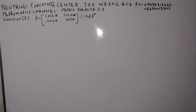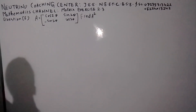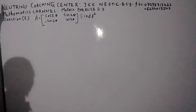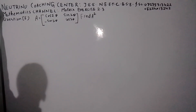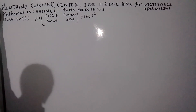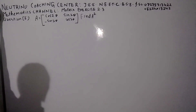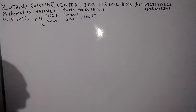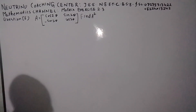Question number 6. Matrix A is: cos(root theta), minus sin(root theta); sin(root theta), cos(root theta). Find A squared — the square of the matrix up to point theta.